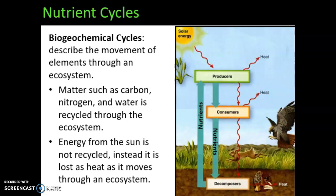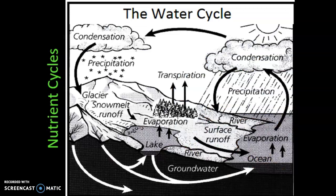The first cycle we're going to talk about is the water cycle. This diagram right here shows you everything you need to know about the water cycle. It's a lot of terms you should already be familiar with. You have liquid water that gets evaporated — now it's in the atmosphere. It forms clouds and things like that. As it cools down, we have this process called condensation, where it forms water droplets.